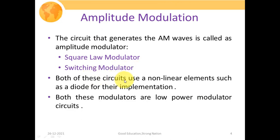Both of these circuits use a nonlinear element such as a diode for their implementation. Both these modulators are low power modulator circuits — that is, we modulate our signal when they are at low power level. Then after modulation, we apply them to an amplifier which will further increase the power of your modulated signal so that they can be transported over longer distances.